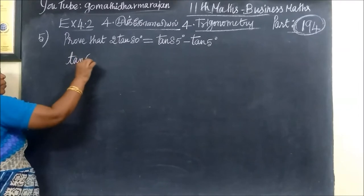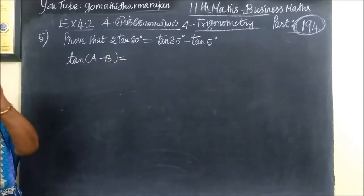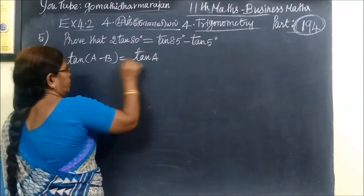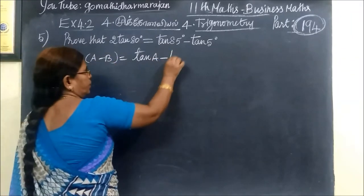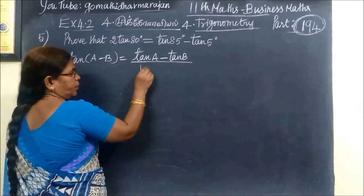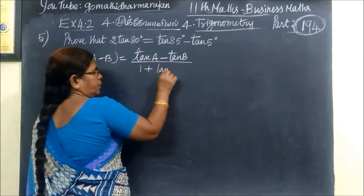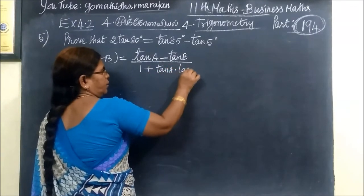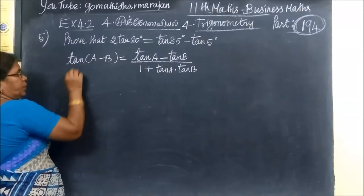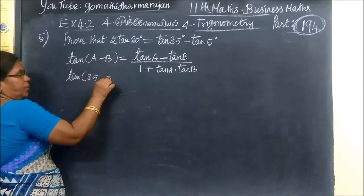Tan of A minus B. What is tan of A minus B? Tan of A minus B equals tan A minus tan B divided by 1 plus tan A times tan B. Then we replace A as 85°, so tan of 85 minus 5.